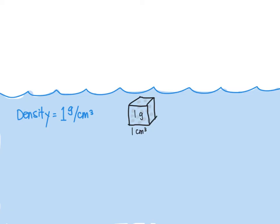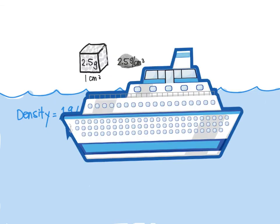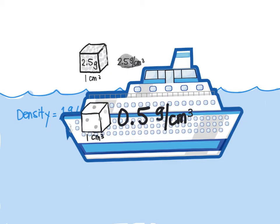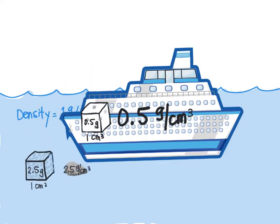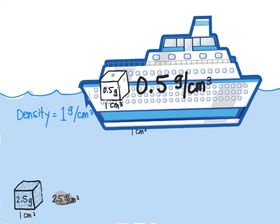Now here's how you determine whether something will sink or float in water. This pebble has 2.5 grams per centimeter cubed — it is packed with more than twice the stuff in a cube than water. And this cruise ship has about 0.5 grams per centimeter cubed, which means that it has less mass packed in the cube. So anything more dense than water will sink, and anything less dense than water will float.